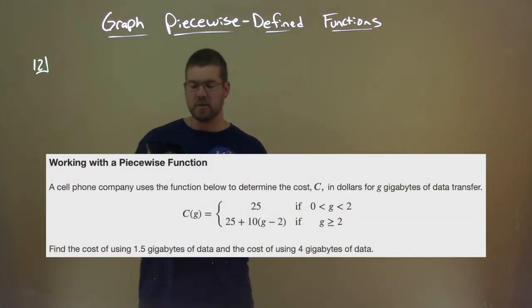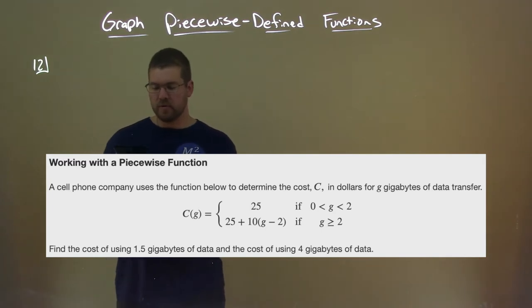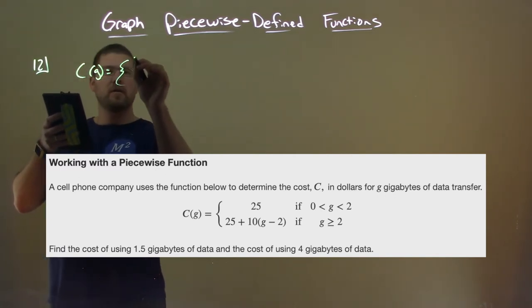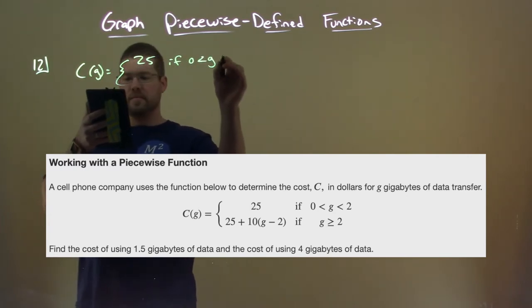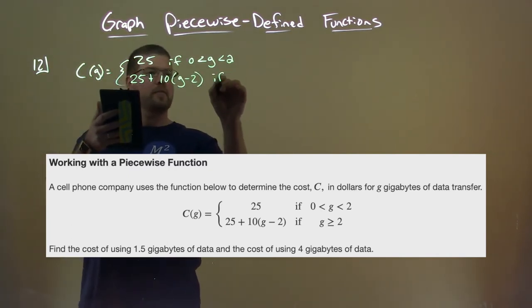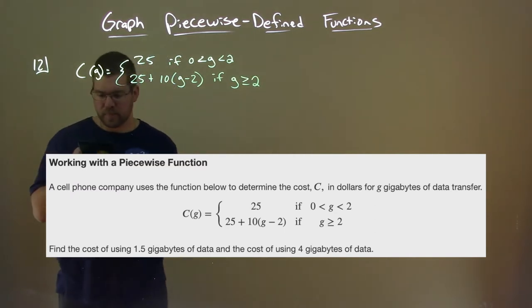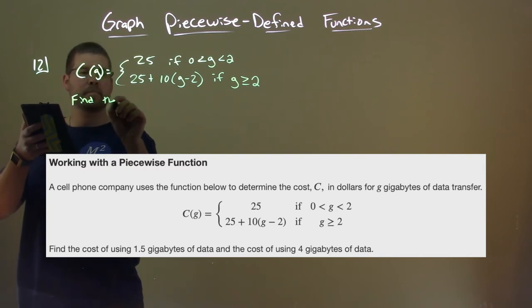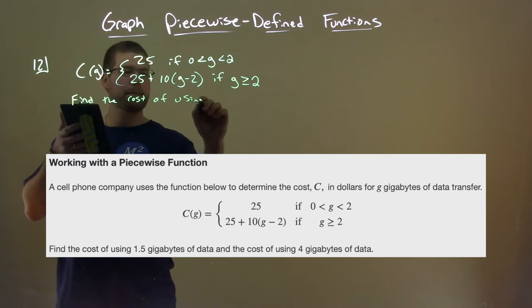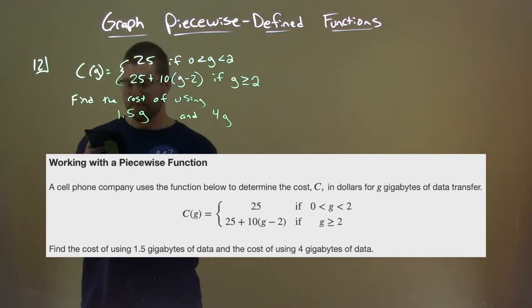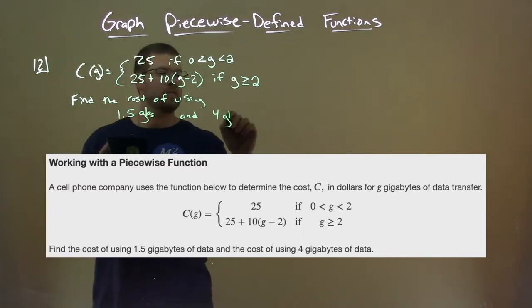All right. So we have a cell phone company, and it uses the function below to determine the cost c in dollars for g gigabytes of data transfer. c of g is equal to the curly bracket of 25 if 0 is less than g which is less than 2, and 25 plus 10 times g minus 2 if g is greater than or equal to 2. So we want to find the cost of using 1.5 gigabytes of data and the cost of using 4 gigabytes of data.